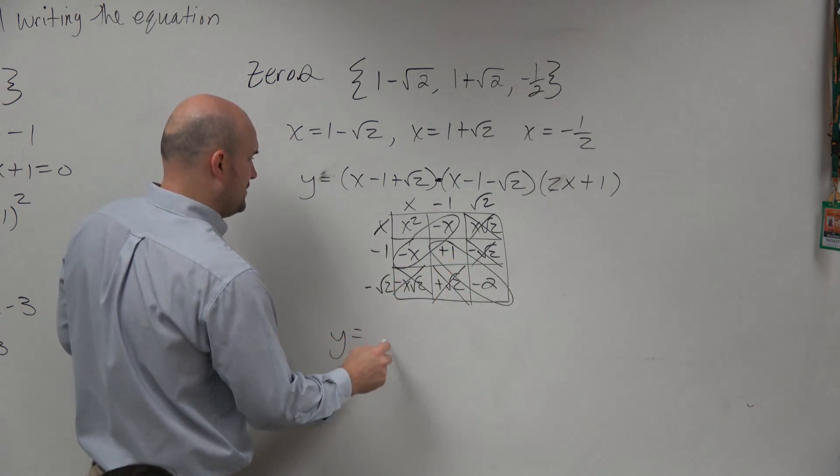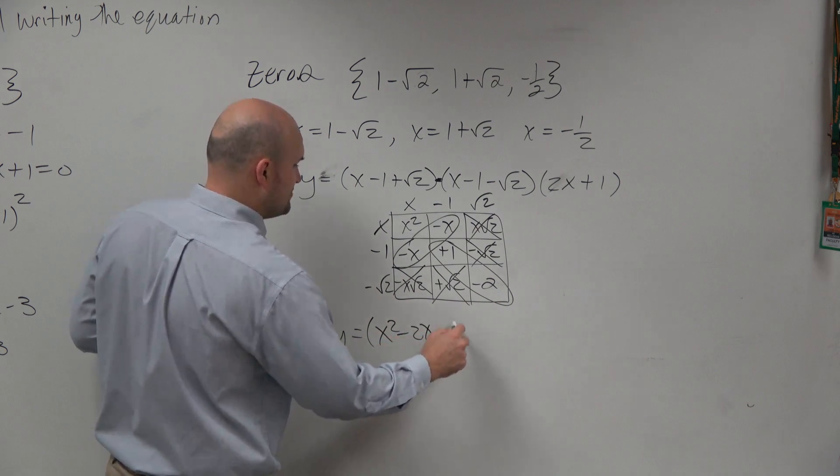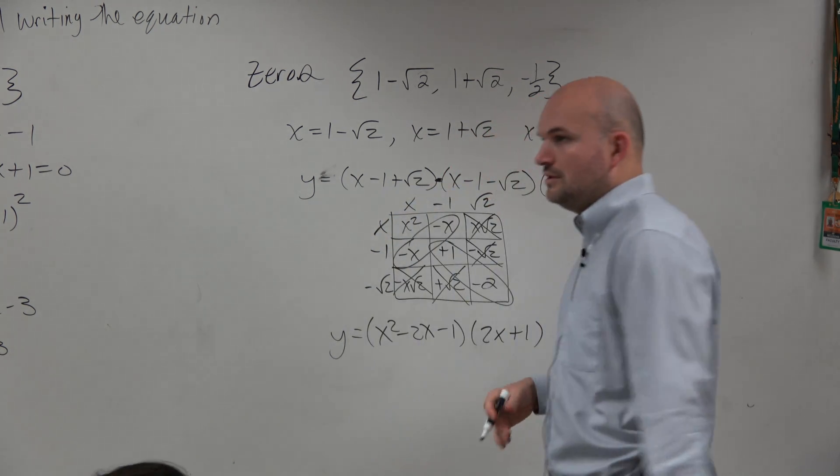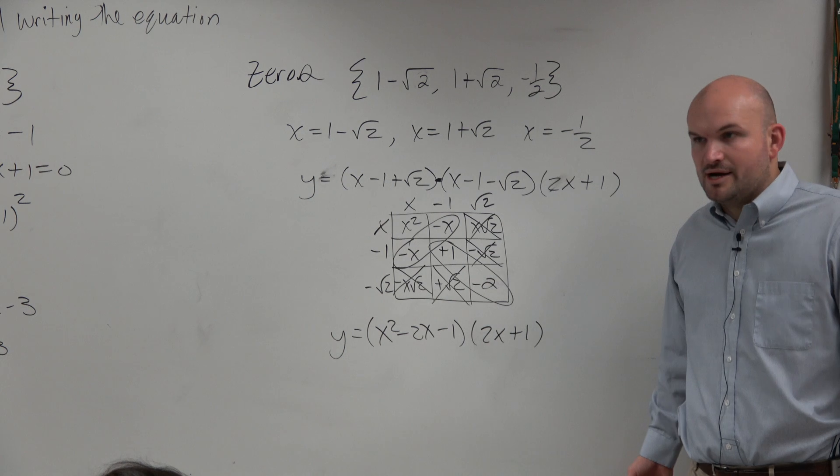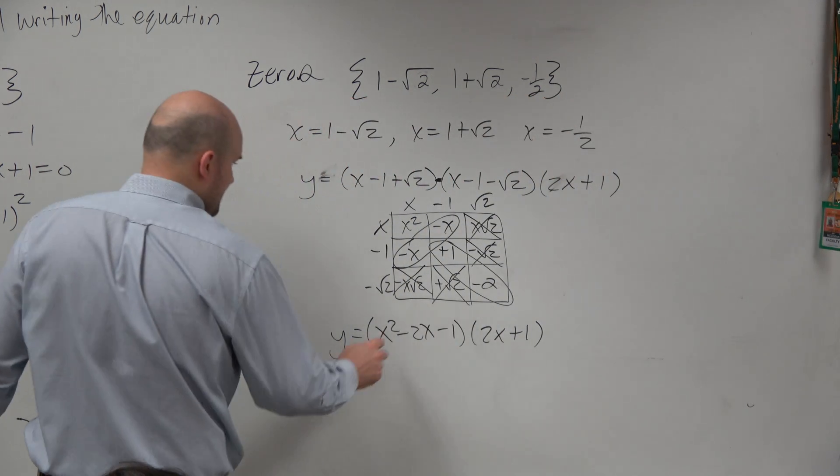So now we have y equals x squared minus 2x minus 1 times 2x plus 1. Well, I can do a trinomial times a binomial, right? I can just use distributed property there. So that's exactly what I'll do to finalize my answer.